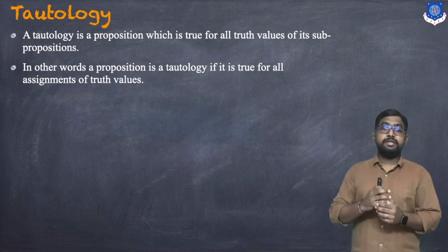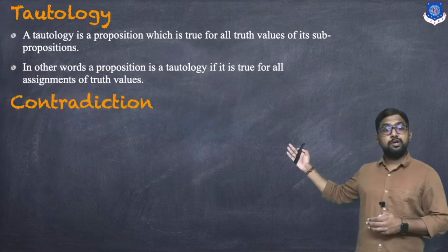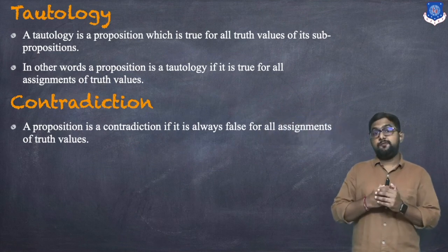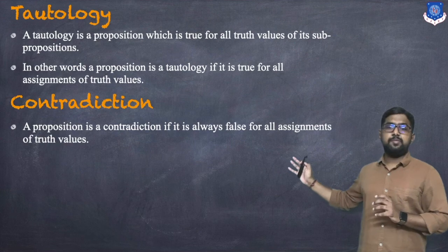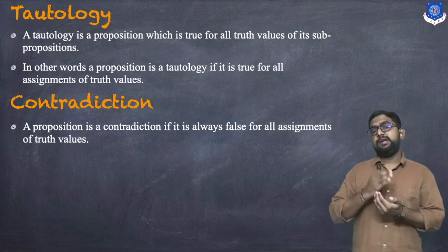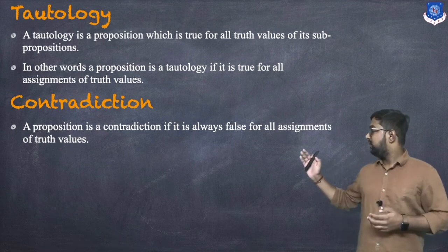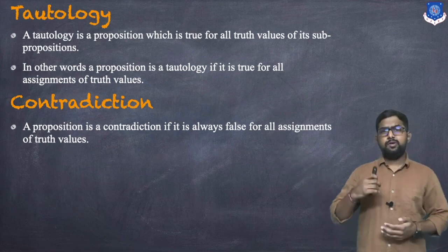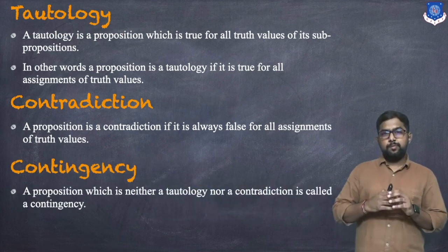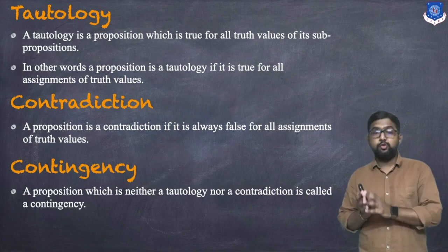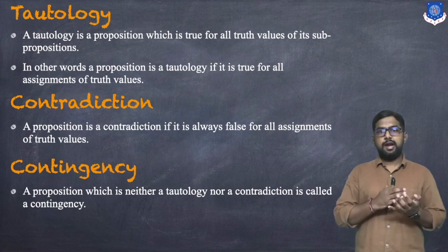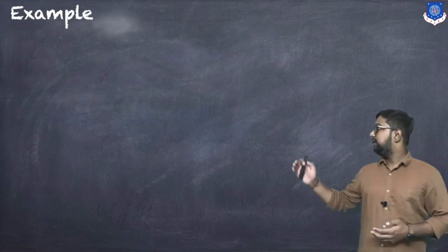A proposition is a contradiction if it is always false for all assignments of truth values. So if all truth values are true it is a tautology, and if all truth values are false it is a contradiction. A proposition which is neither a tautology nor a contradiction is called a contingency.